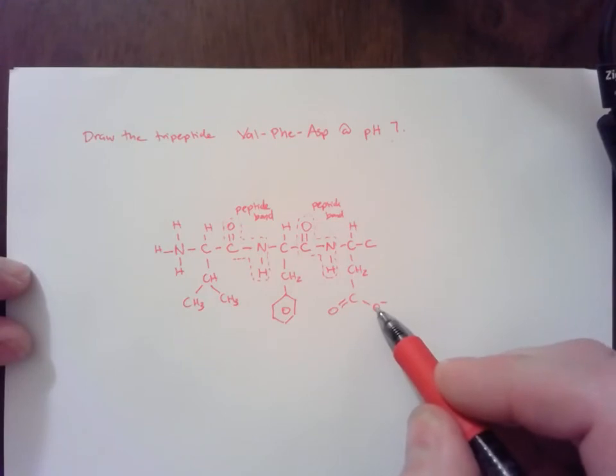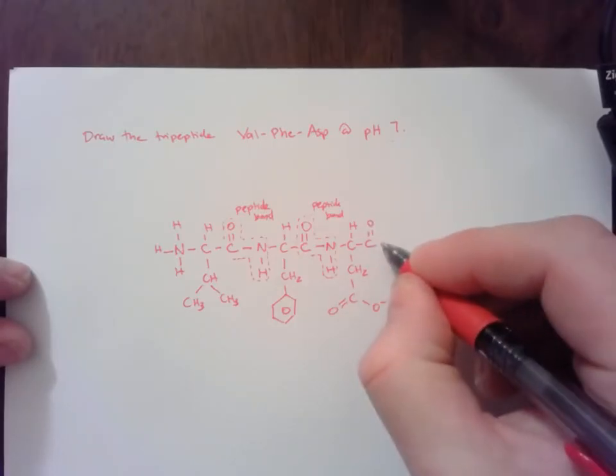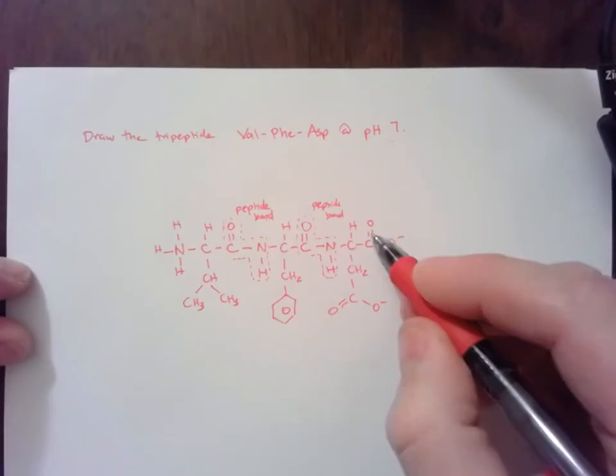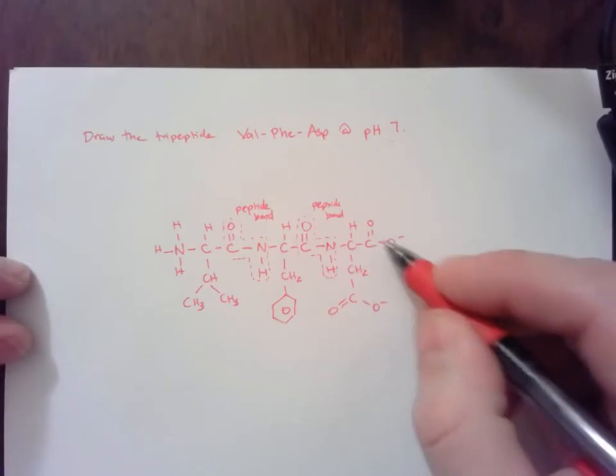The only time this COO, or any COO in a protein, is going to be protonated, meaning it's COOH, is at pH 1. We're not at pH 1, we're at pH 7. So both of these are negatively charged.